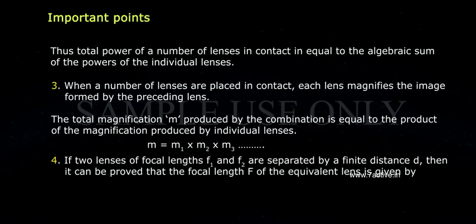If two lenses of focal lengths F1 and F2 are separated by a finite distance D, then it can be proved that the focal length F of the equivalent lens is given by 1 by F equals to 1 by F1 plus 1 by F2 minus D by F1 F2.